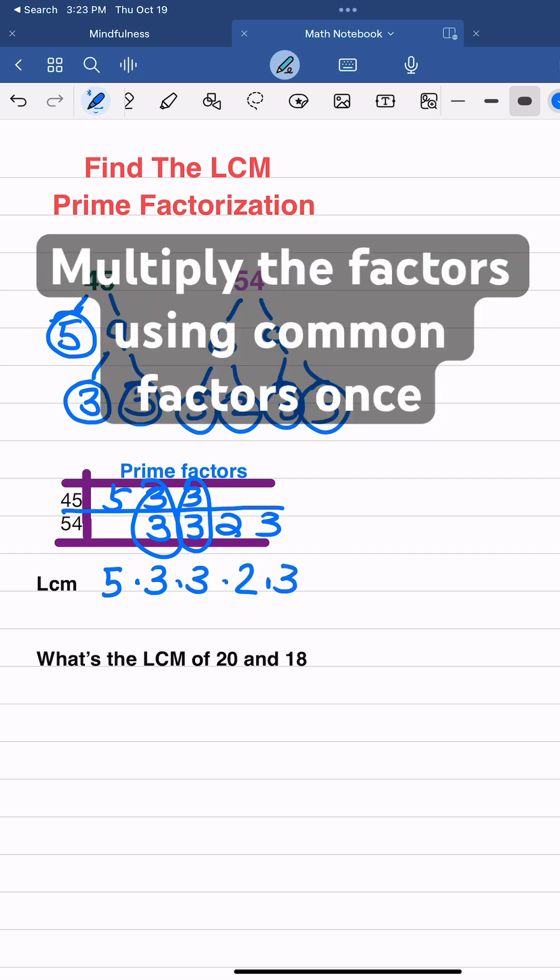Once I've matched them up, I'm going to multiply the factors, only multiplying those common factors once. So 15 times 3 is 45, 45 times 2 is 90, and 90 times 3 will get me to that magical number 270.